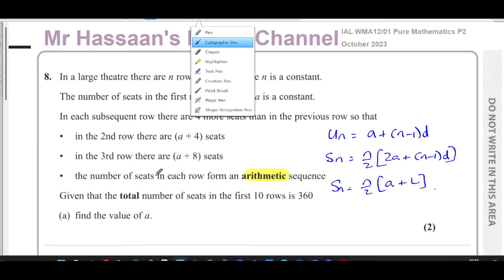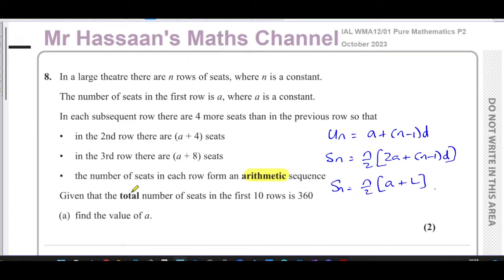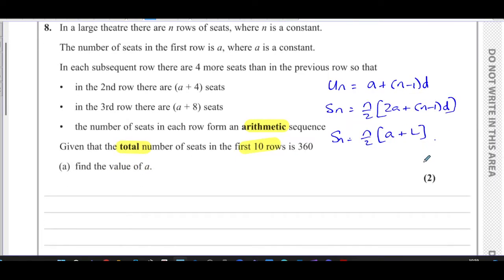In this question it says the total number of seats in the first 10 rows — that's the sum of the seats in the first 10 rows — so we have to deal with the sum formula. This is an arithmetic sequence, which means there is a common difference and a first term. The first term is called a, which matches the formula, and the common difference d is the number you add each time to get from one term to the next.